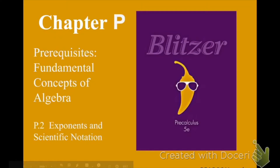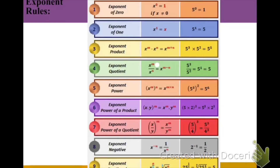Chapter P, Prerequisites: Fundamental Concepts of Algebra. Lesson P2: Exponents and Scientific Notation. Today we're going to be going over all the different rules when we're working with exponents — in this case, simplifying and evaluating these exponents. This table shows all the different rules, so please pause here if you'd like to look at these more in depth, but we're going to go over them each individually.